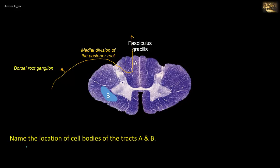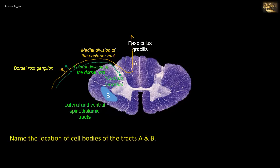B represents the location of the spinothalamic tracts — lateral and ventral spinothalamic tracts — often grouped together as the anterolateral system. The fibers here are of second-order neurons; first-order neurons are also present in the dorsal root ganglion, conveying pain, touch, and temperature sensation. Central processes enter the spinal cord through the lateral division of the dorsal root, and relay in dorsal horn cells. Neurons in the nucleus proprius give rise to axons that cross in the anterior white commissure and ascend in the contralateral spinothalamic tract. Thus, fibers in B are crossed fibers at this level, while fibers in A are uncrossed.